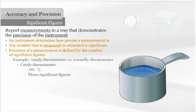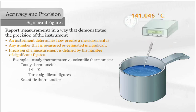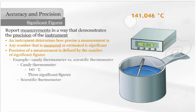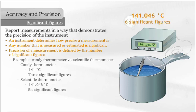If the same chef uses a scientific thermometer, she can measure to thousandths of a degree Celsius, such as 141.046 degrees Celsius. 141.046 degrees has six significant figures, indicating a more precise instrument was used to measure.